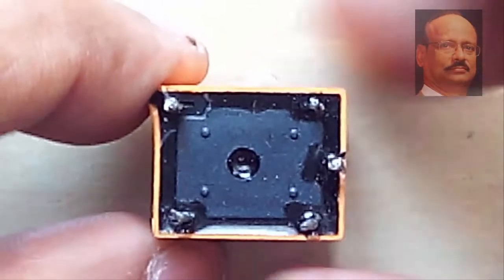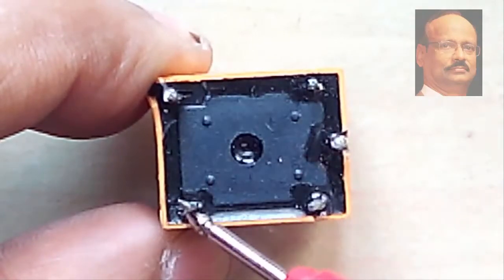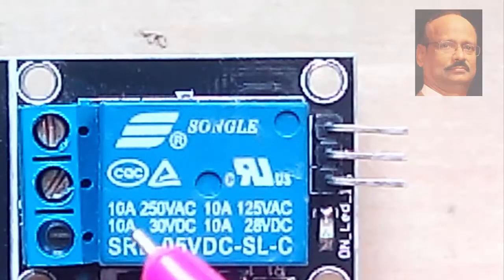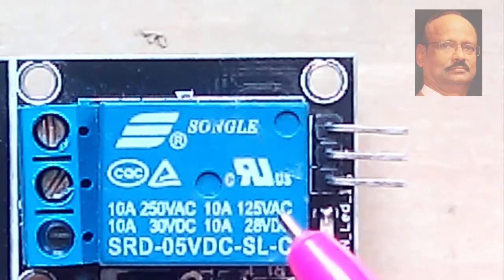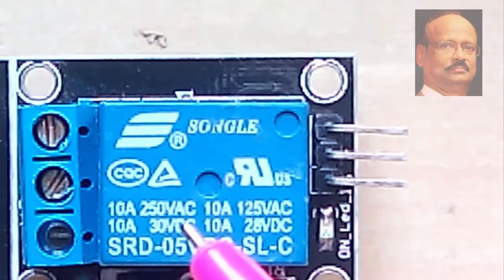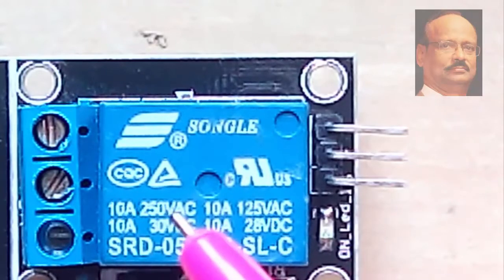Sometimes you get relays of this nature where the same thing, we have these are the coil points. This is the common point, one is NO and NC. And these are the contacts. The contact ratings are 10 ampere at 250 volt or even 10 ampere at 125 volt AC and 10 ampere at 30 volt DC and 10 ampere at 25 volt DC. This is the contact rating.